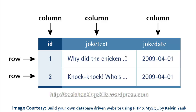For example, if you want to store usernames and passwords, you can make a table, call it 'login', and hold information regarding all your login details. A table can have columns and rows. Every new piece of information fed into a table is inserted as a new row.